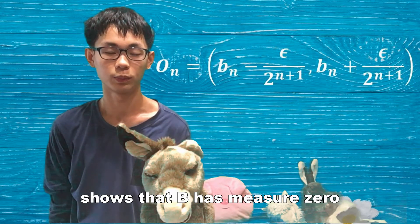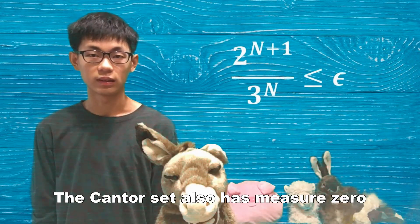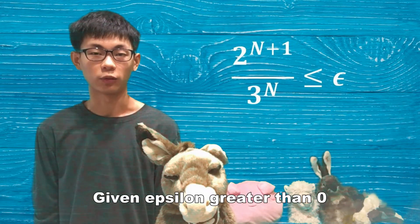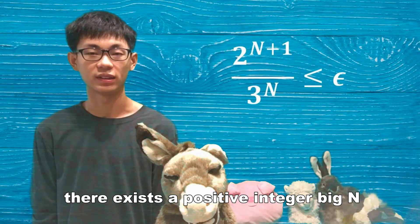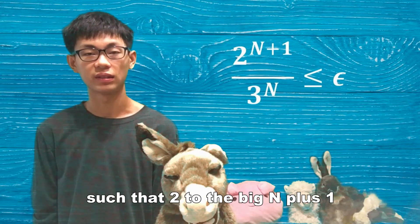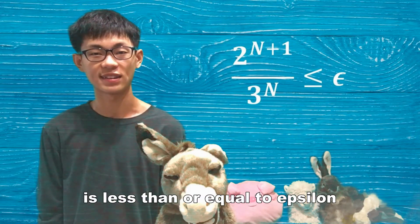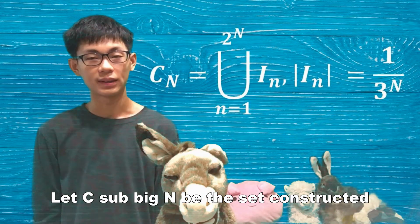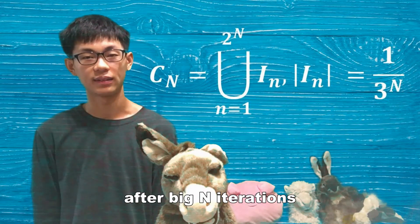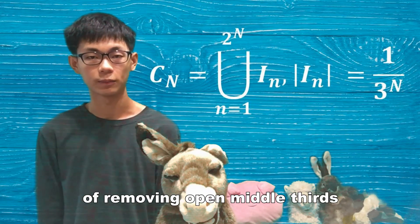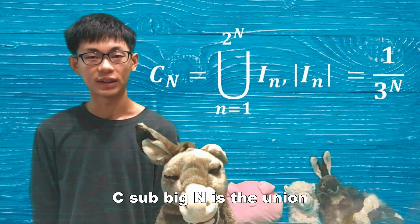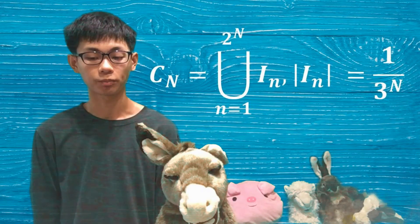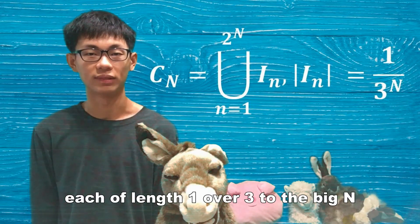The Cantor set also has measure zero. Given epsilon greater than zero, there exists a positive integer big N such that 2 to the big N plus 1 over 3 to the big N is less than or equal to epsilon. Let C sub big N be the set constructed after big N iterations of removing open middle thirds. C sub big N is the union of 2 to the big N closed intervals I sub n, each of length 1 over 3 to the big N.